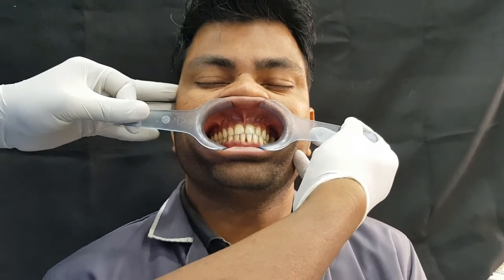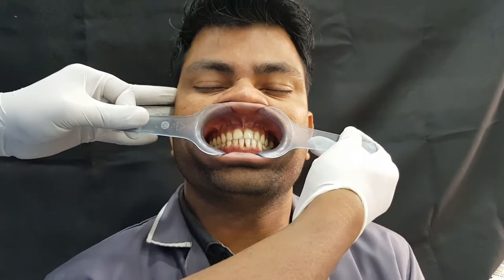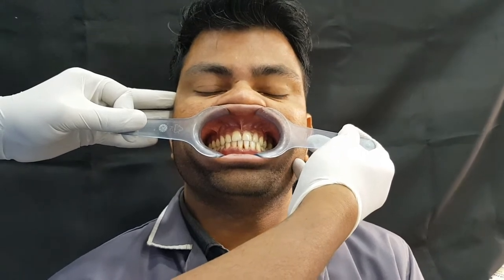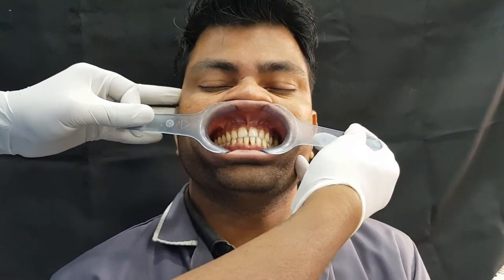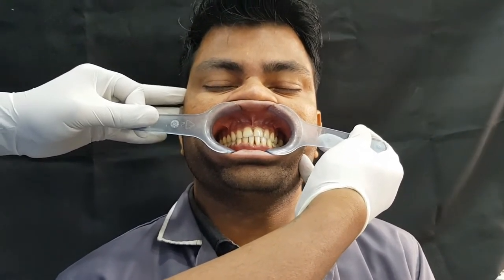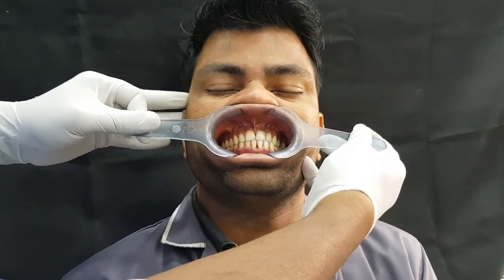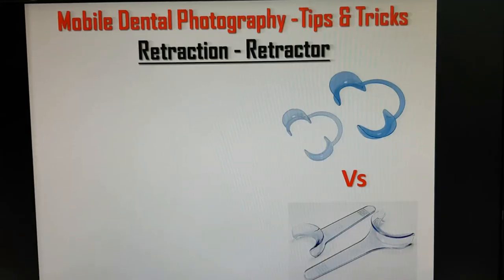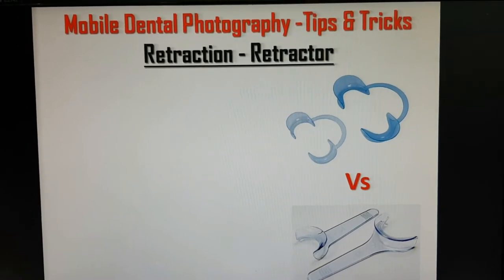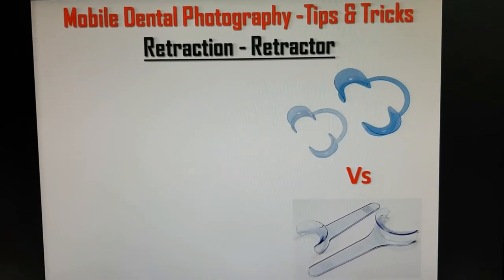One more important point to always remember when using this kind of retractor: you should always be able to see the vestibule. If you are not able to see the vestibule, it means your retraction is not proper.